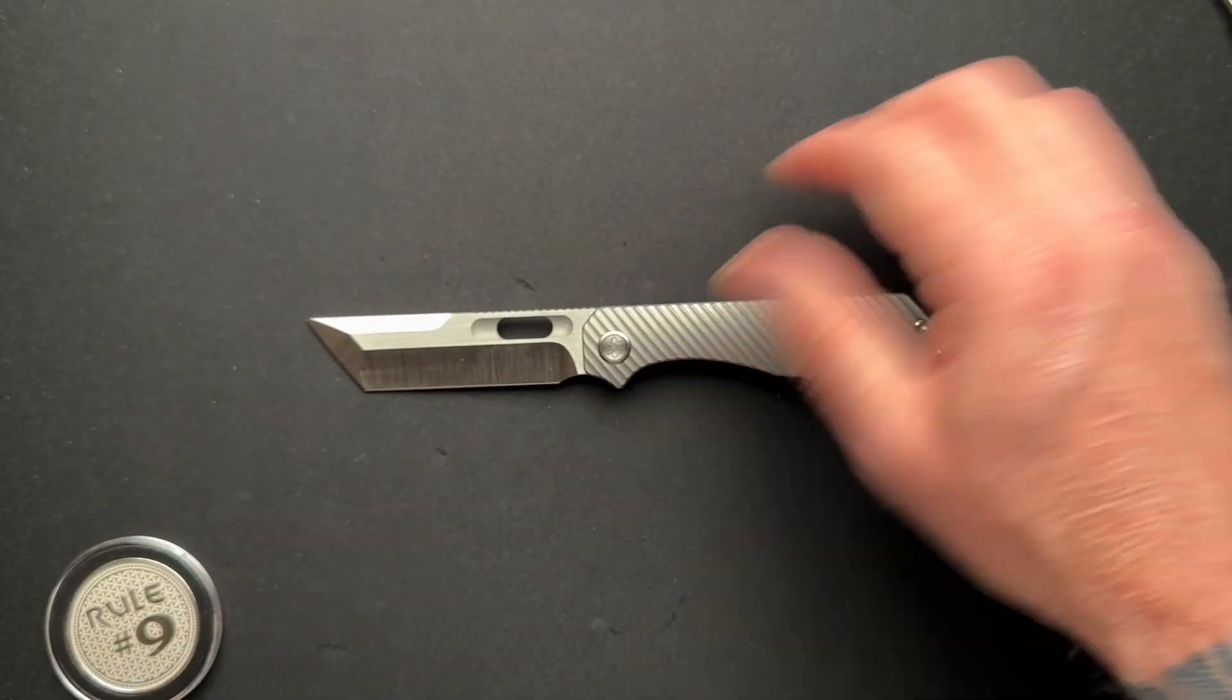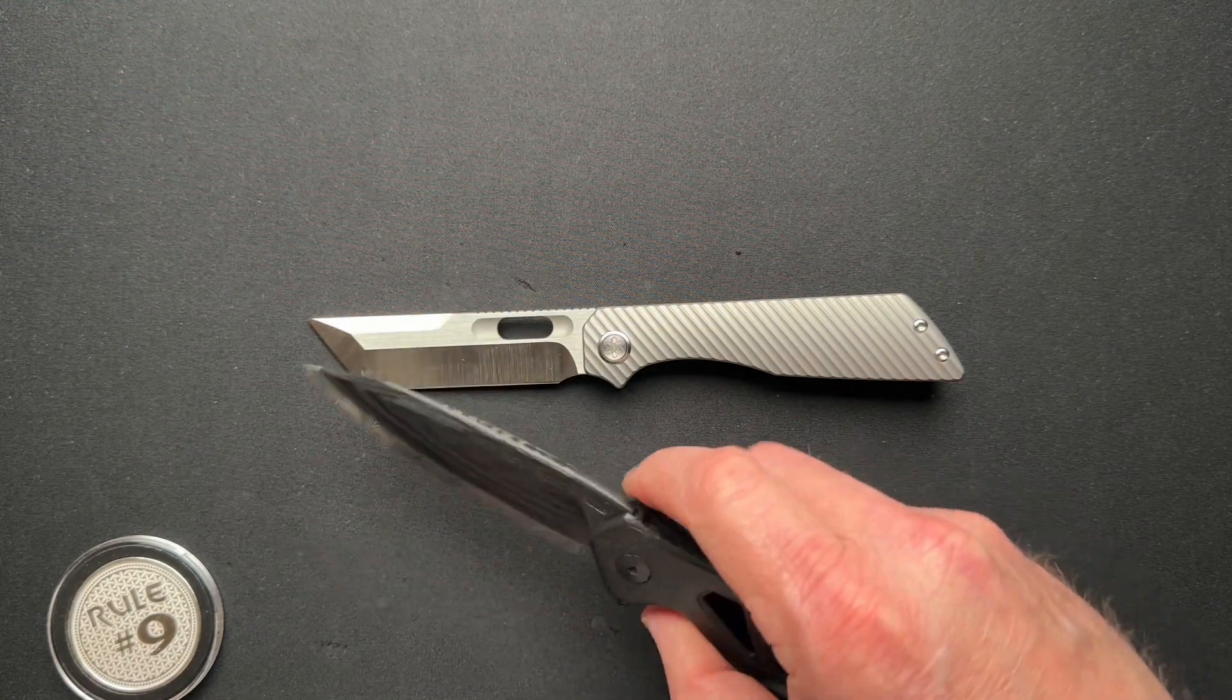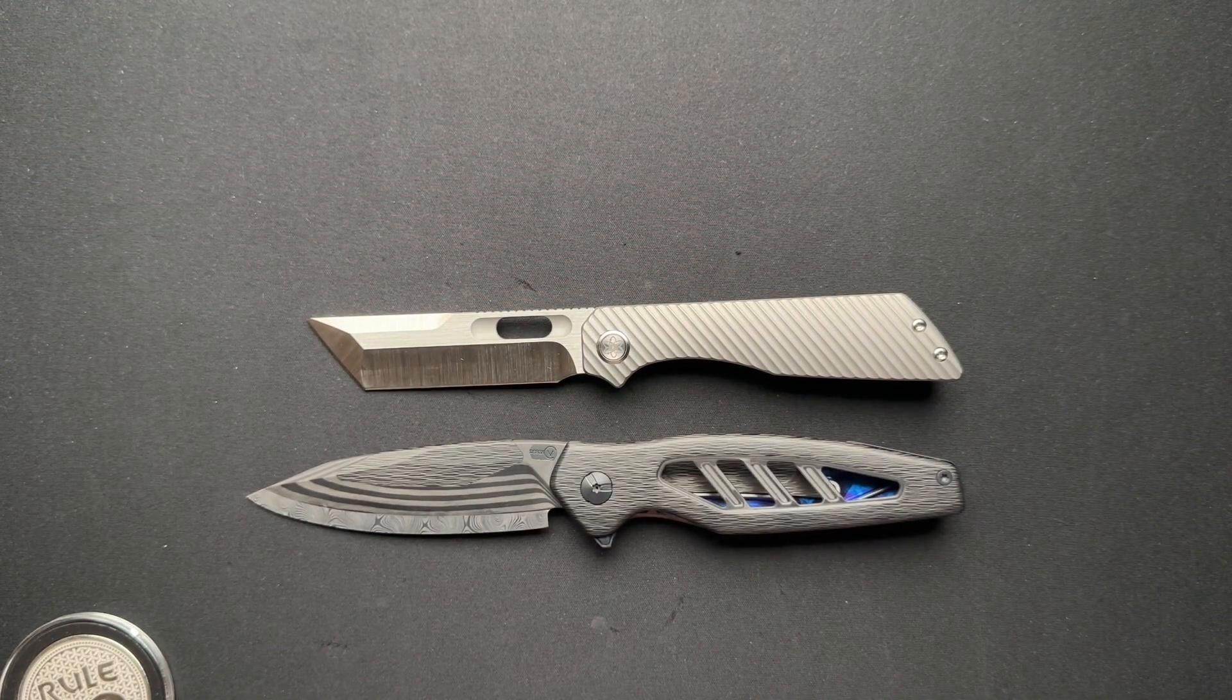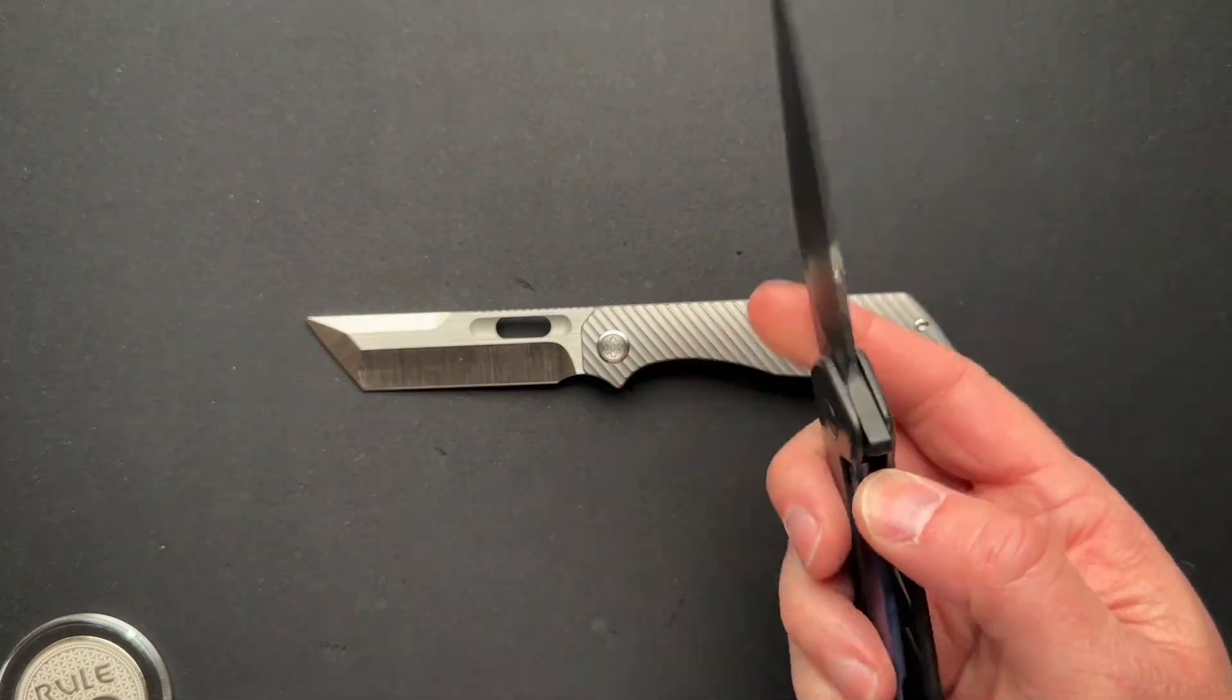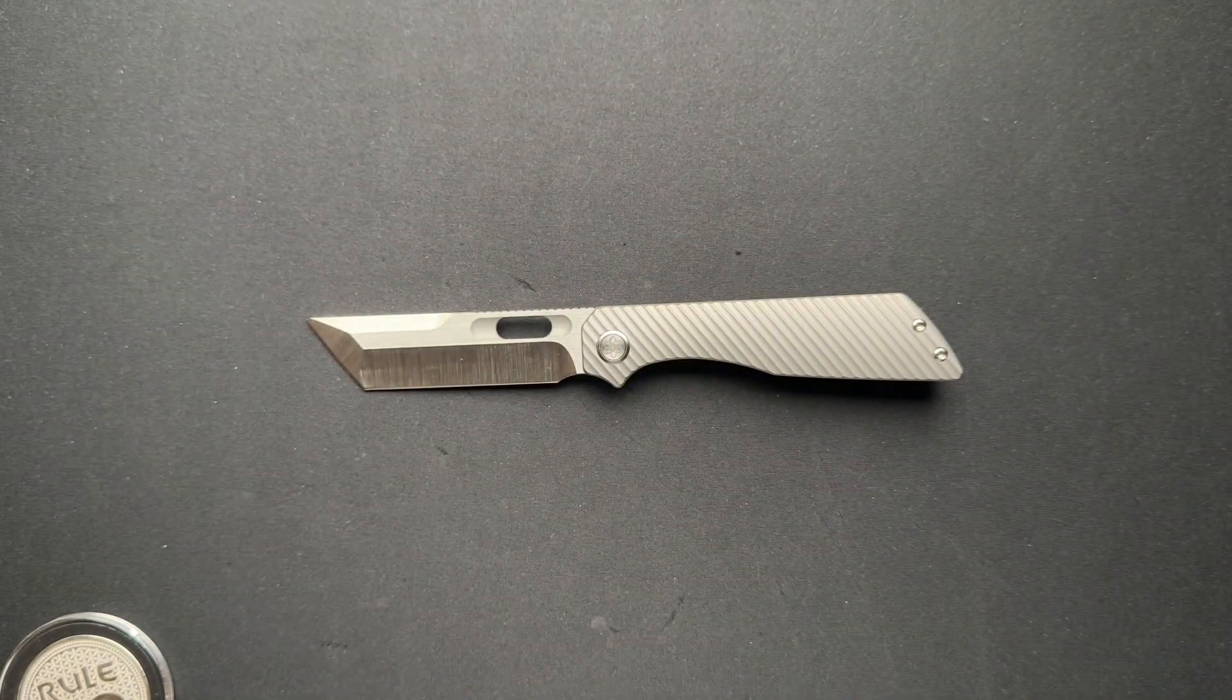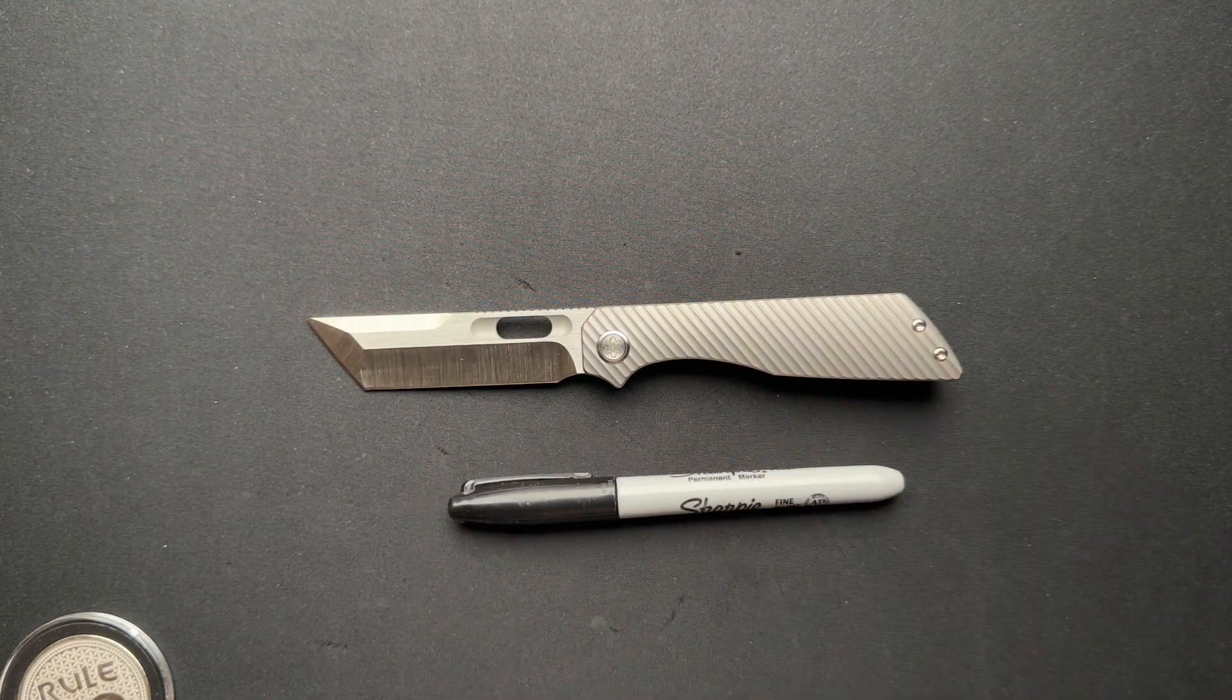Let me give you a couple of size comparisons really quick before we end this. Since we're talking about Timascus, how about the VCEG interface number 80, which is a full dress with Timascus lock bar and inserts on the flipper tab. Your Spyderco Delica and your Sharpie.